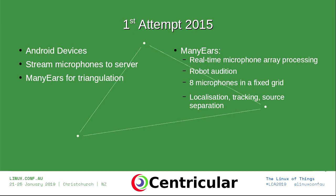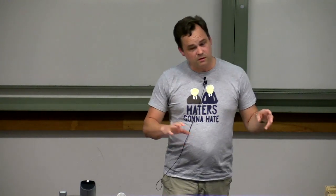In my first attempt at this in 2015, I got a bunch of Android devices, put Arena on those, used their microphones, and sent the audio to a library called MANYEARS, written in part by Jean-Marc Valin — one of the main codec guys who gave us the Speex codec and worked on Opus. MANYEARS is designed to do audition for robots with a fixed grid of eight microphones. It can do localization of the direction sound is coming from, track someone moving, and separate out individual sound sources — isolating someone speaking from a TV playing in the same room and picking their voice out of the noise, which is pretty critical for good voice recognition.